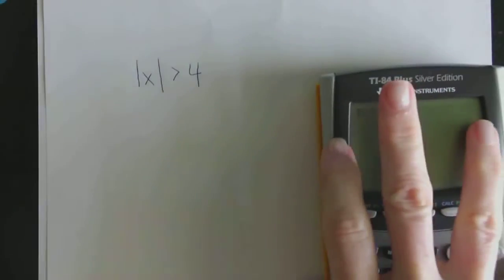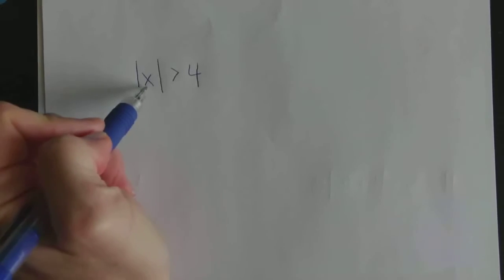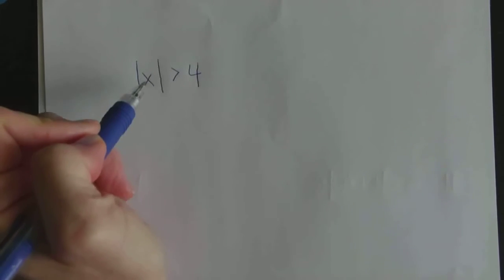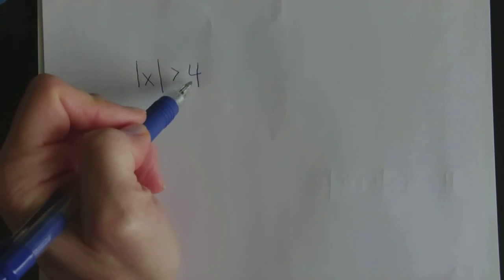I'm going to do these on a separate sheet of paper — you can write them right on here or on separate paper, it's up to you. Here's Example 1. We're going to do it algebraically first and then come back to the TI-84 to check our answers. Let's think about what this first example is saying: the absolute value of x has to be greater than 4. Whatever I put in for x, its distance from 0 has to be more than 4 away. I'm thinking of a number line.